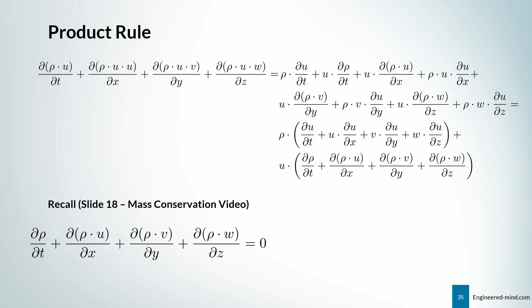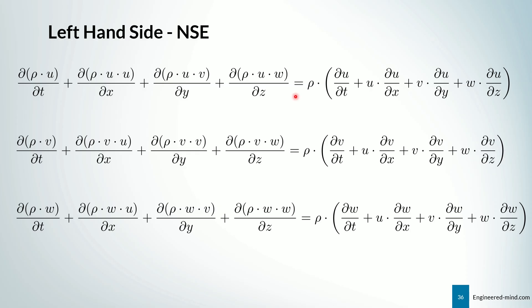We can use the product rule for the left hand side. And you end up with the following equations. And if you recall from slide 18 of the mass conservation equation, that we said that this equation here holds, then this last part of the equation is equal to zero. And u times zero is zero anyway. So this term goes out of the equation.